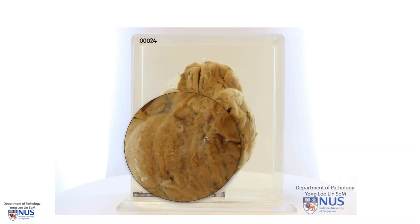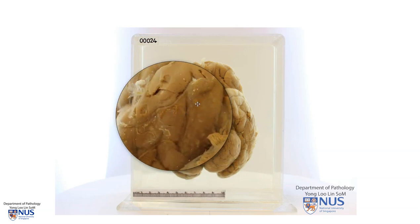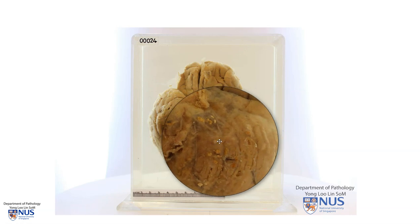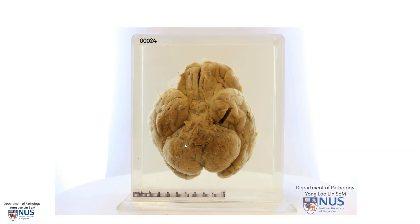If we look over the rest of the brain, here for example is one of the cerebellar hemispheres, we can actually see some discrete yellowish areas of discoloration — here again, and here again, and we can see some areas here as well. So this is an example of tuberculous meningitis, which typically affects the base of the brain. We can see these pale whitish or yellowish exudates, and sometimes we can see more discrete foci.